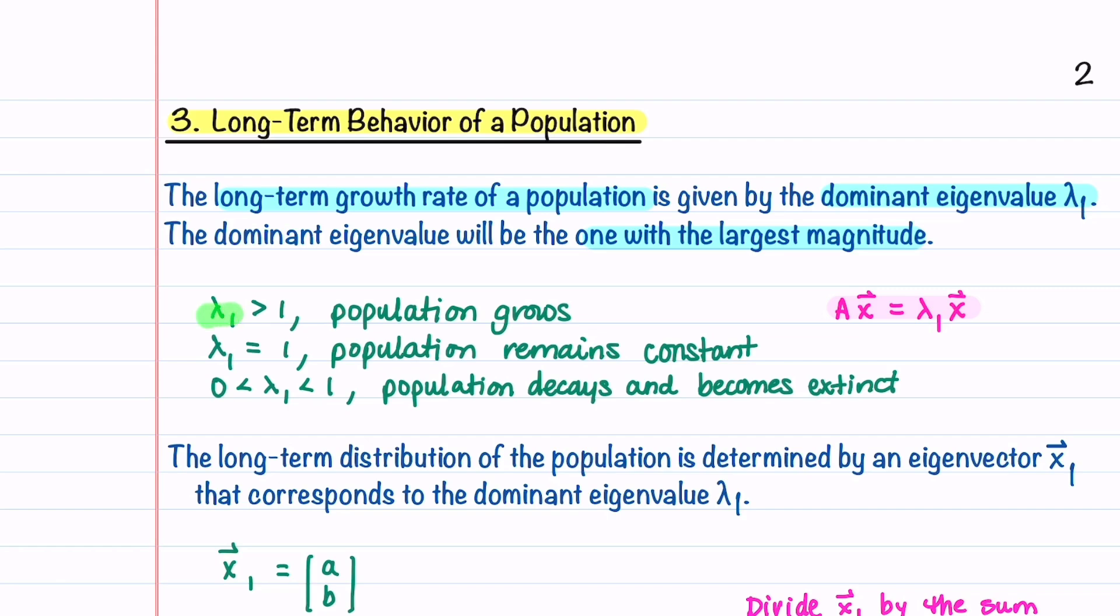If λ_1 > 1, we can see from our equation that the population will grow because Ax, which is λ_1 x, will be greater than x. If λ_1 = 1, the population remains constant, and when λ_1 is between 0 and 1, our population decays and becomes extinct.